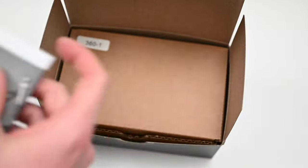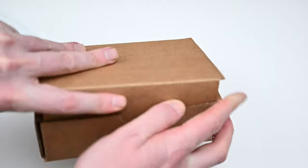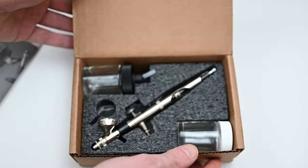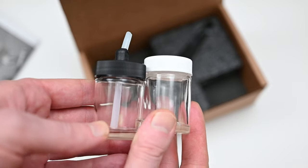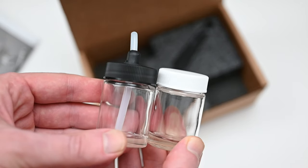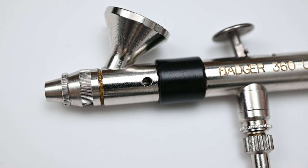Besides the instruction booklet, which has a lot of great information in it, you get the airbrush and two siphon-fed glass jars. Both of these glass jars are three quarters of an ounce each. And if you need larger glass jars, you could buy two ounce ones directly from Badger for only a few dollars.